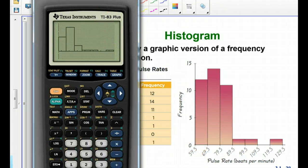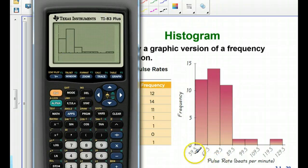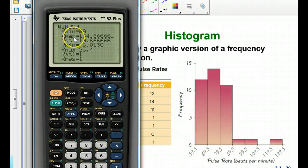my lowest class boundary is 59 and a half. I'm going to change that X min from 60 to 59.5.